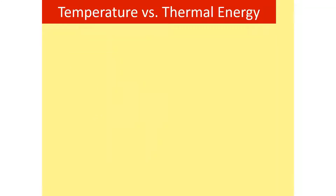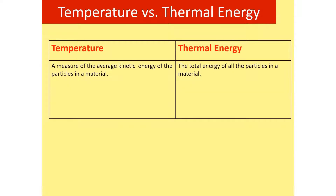What is the difference between temperature and thermal energy? Temperature tells you the average kinetic energy of the particles in a material. On the other hand, thermal energy is the total energy of all the particles in a material. Thermal energy depends on the number of particles — if the number of particles is greater, the thermal energy is higher, provided the temperature is the same.